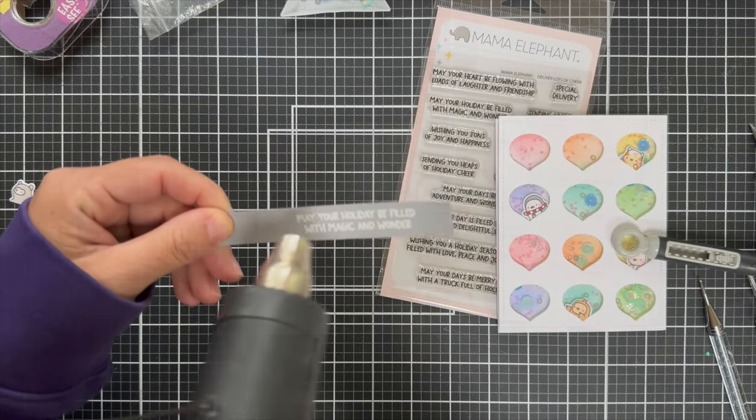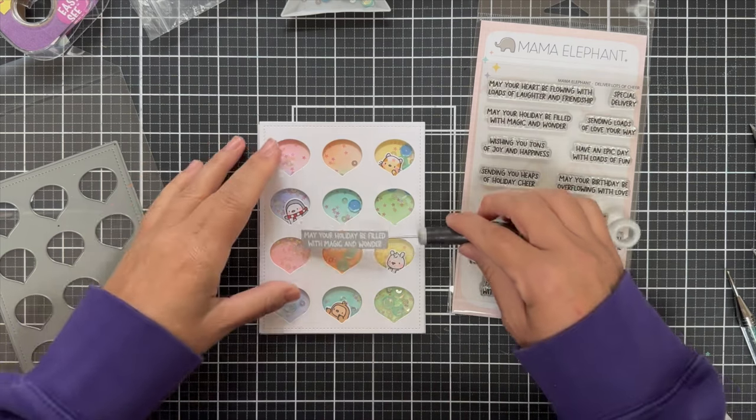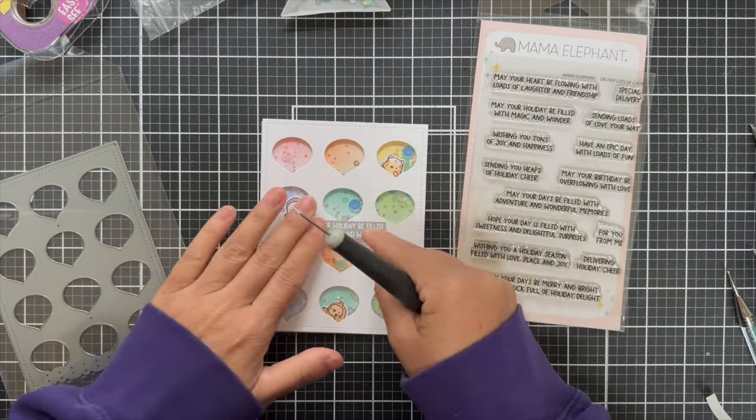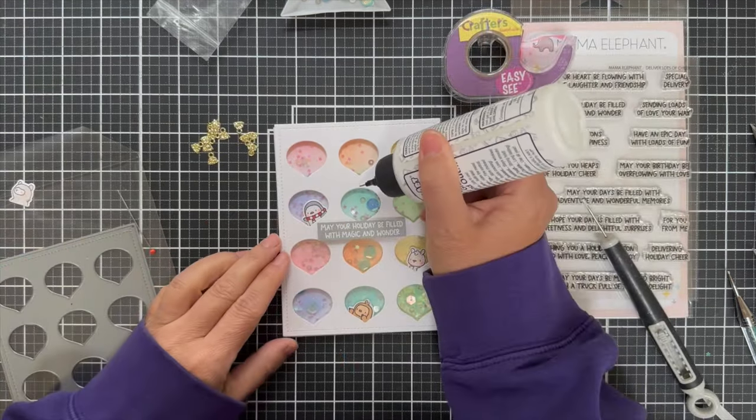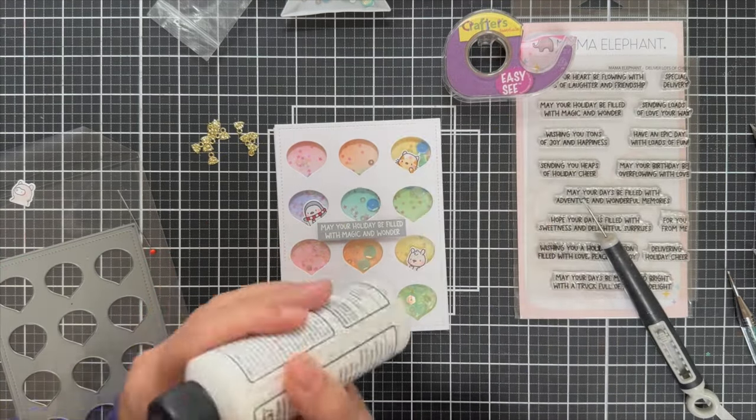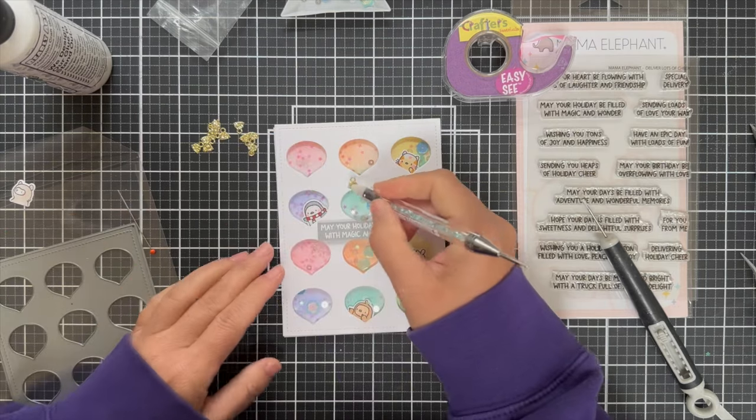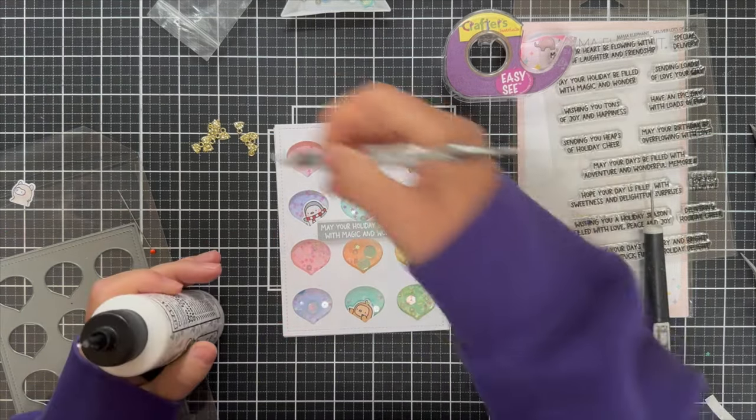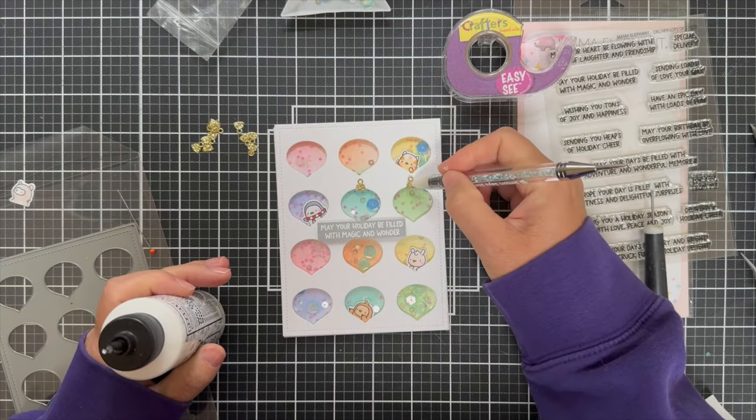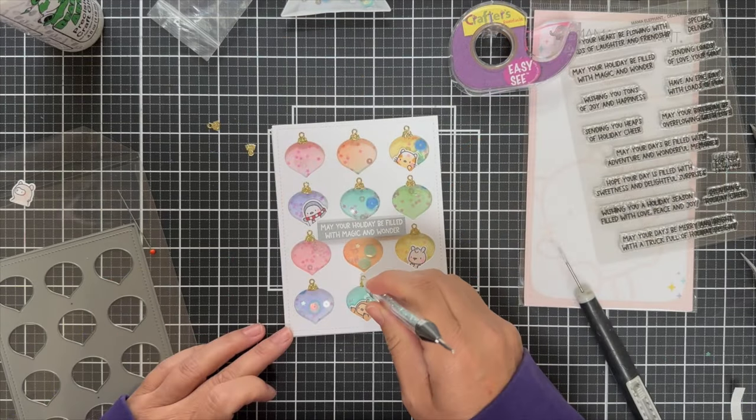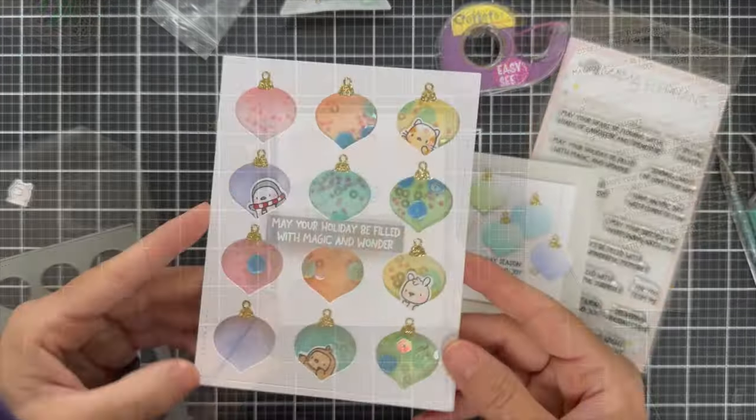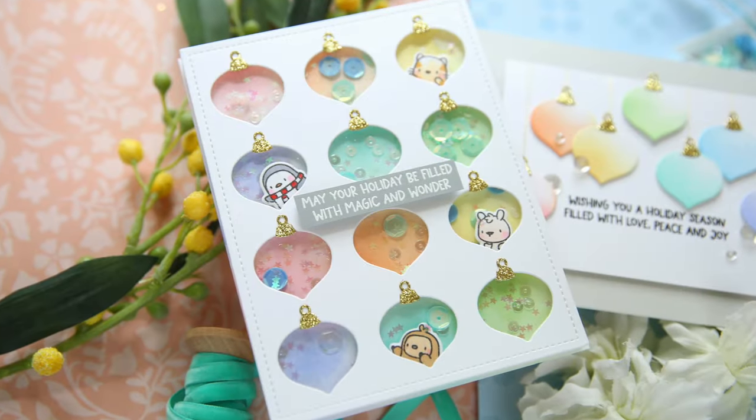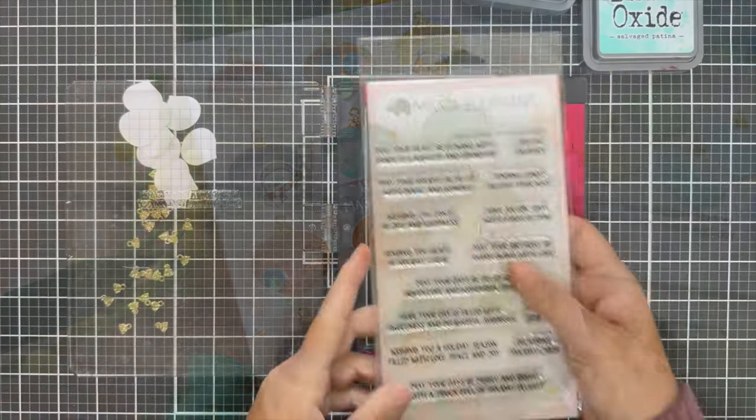So I chose, may your holiday be filled with magic and wonder. Gotta love it. And then I almost forgot to add the little gold glitter ornament toppers. And that just really sends it right home. It'd be cute if you did all different color ornament toppers, but gold kind of keeps it cohesive. So there you have card number one using the negative space of the ornament grid cover.